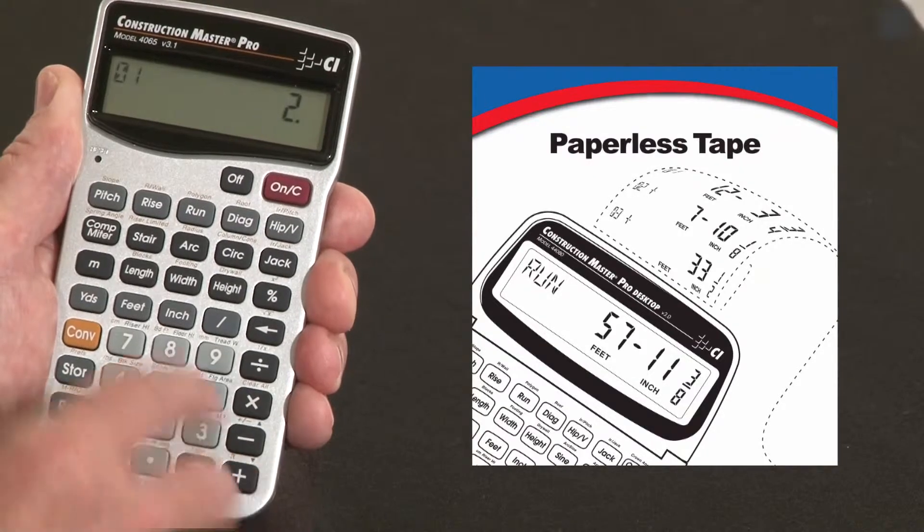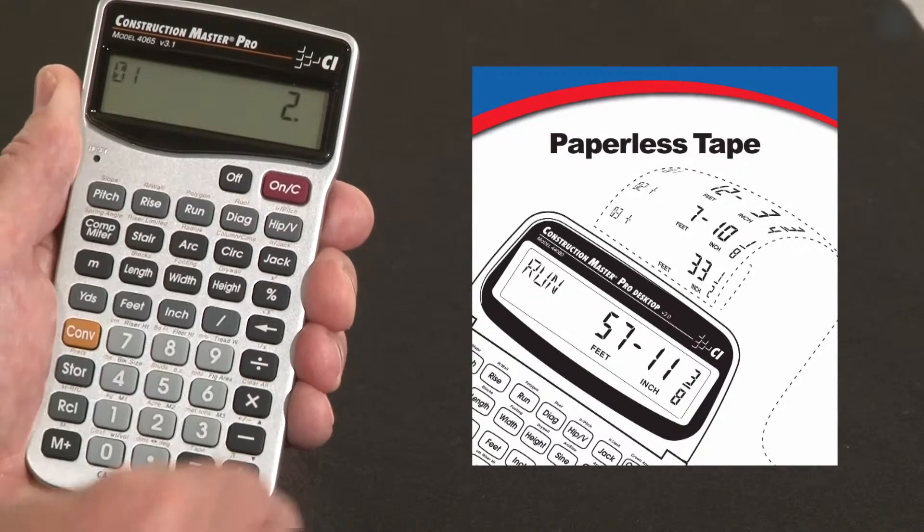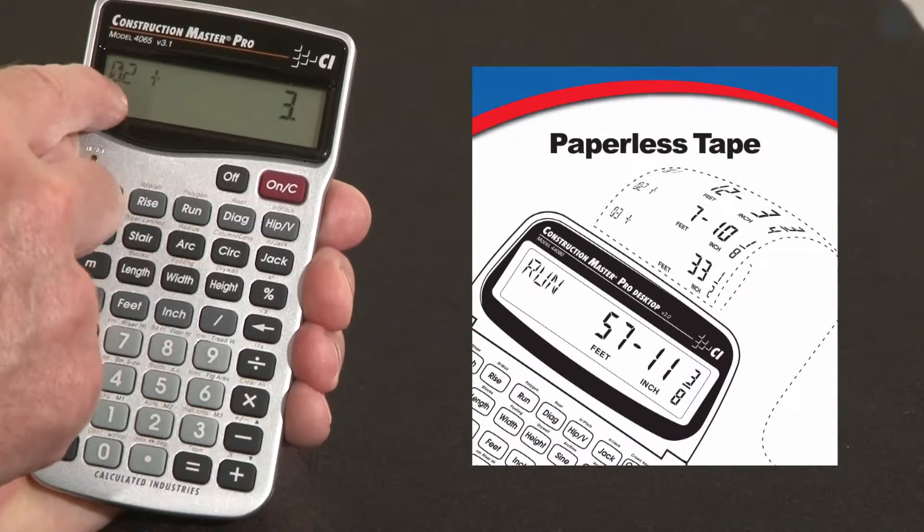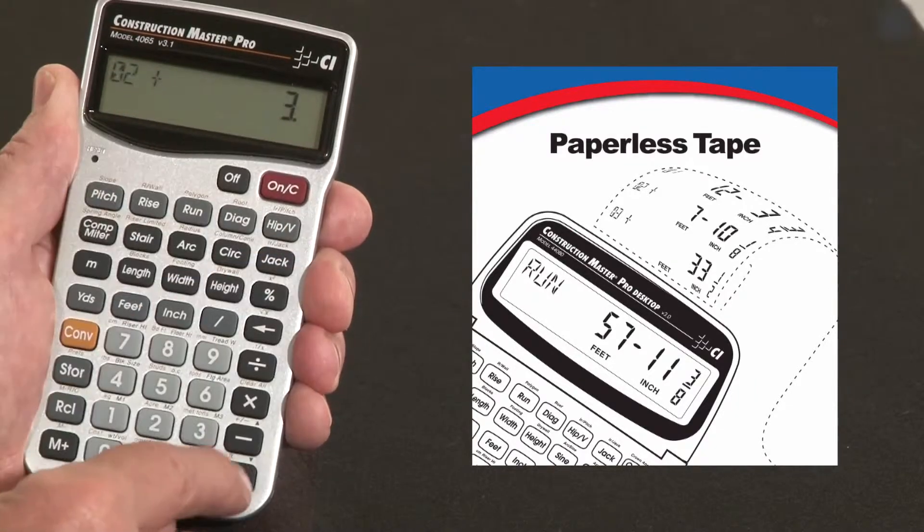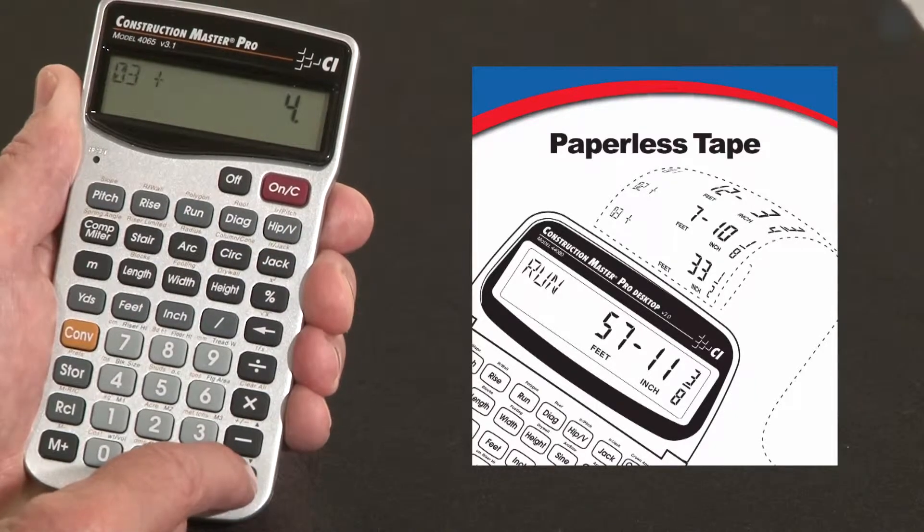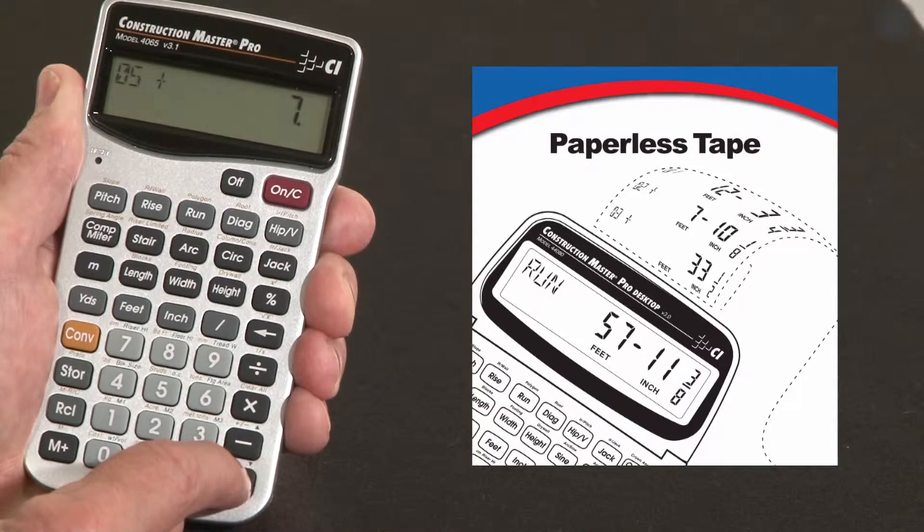Let me hit the plus key. It says the very first entry was a two. The second entry was an addition of three. Then I added a four, then I added a five, and then I added a seven.